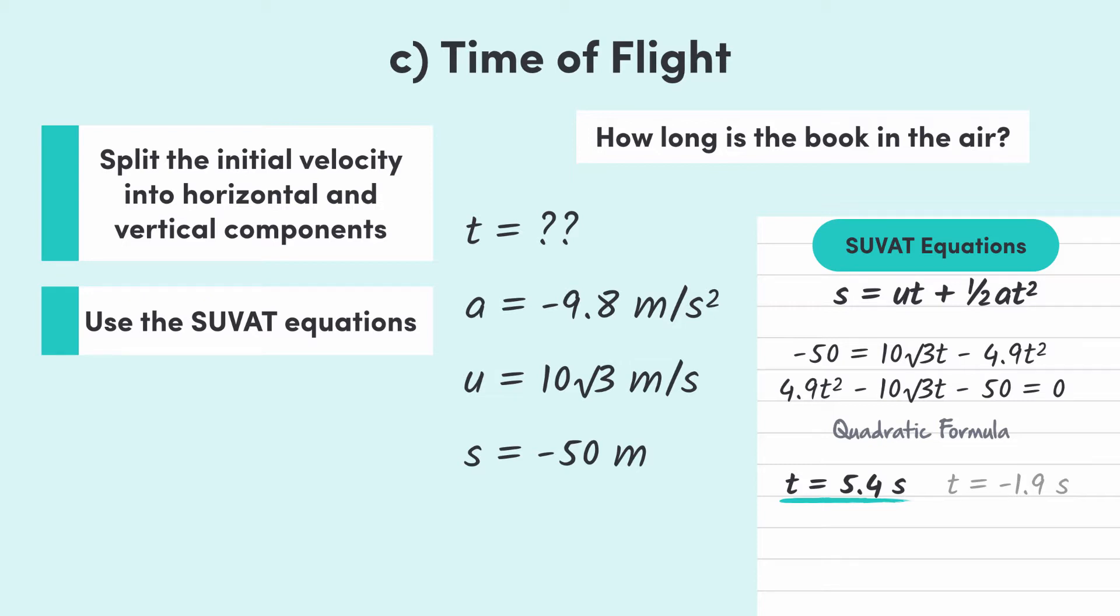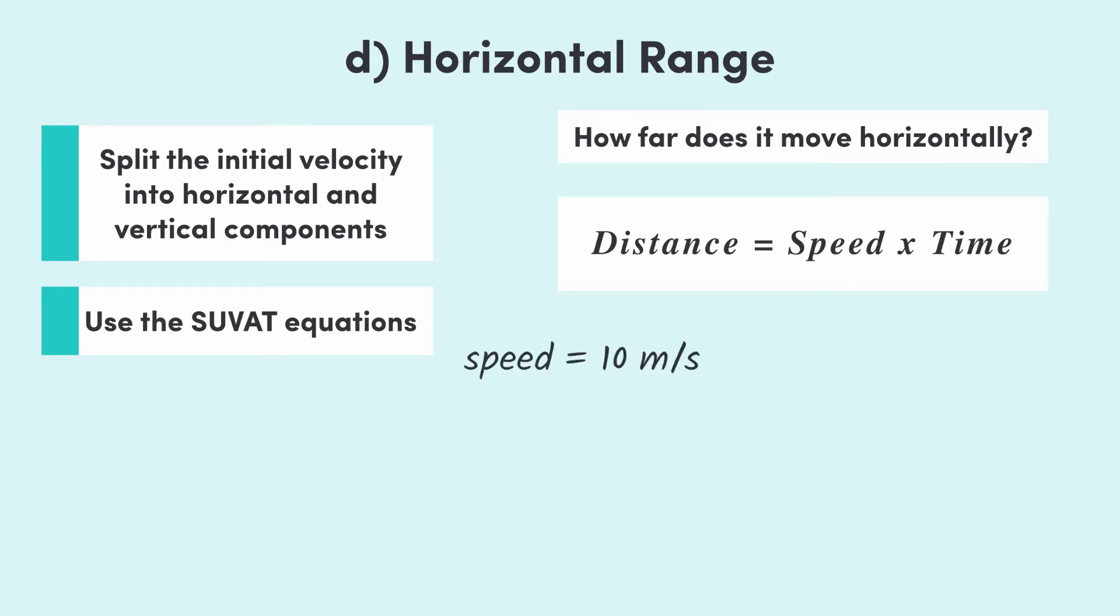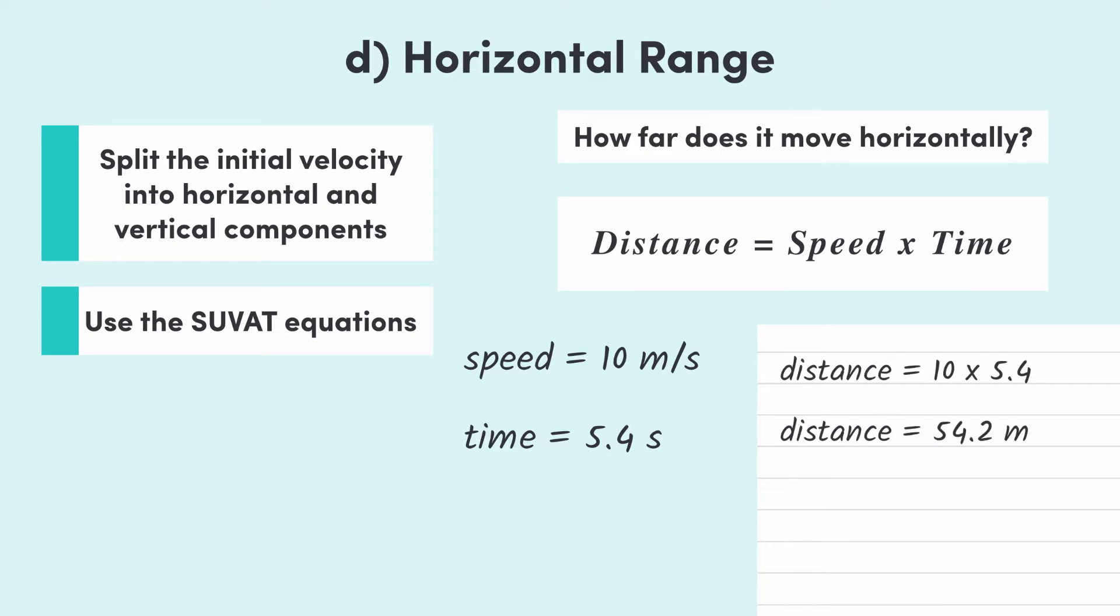Okay, so now it's time for part d, finding the distance the projectile travels horizontally. This one is a horizontal problem, so we have the opportunity to use the horizontal equation of distance equals speed times time, since there's no acceleration. The speed here is the horizontal velocity, 10 meters per second, and the time was found in part c, 5.4 seconds, since horizontal and vertical time are the same. So, the distance horizontally is 10 times 5.4, which is 54.2 meters.